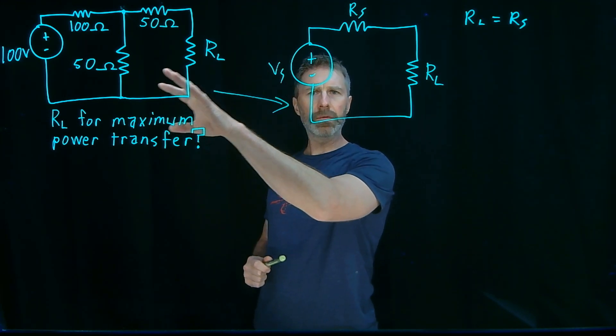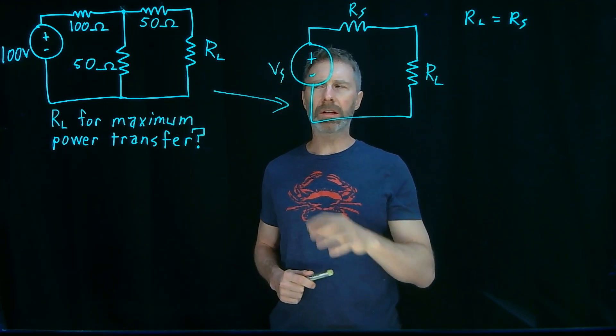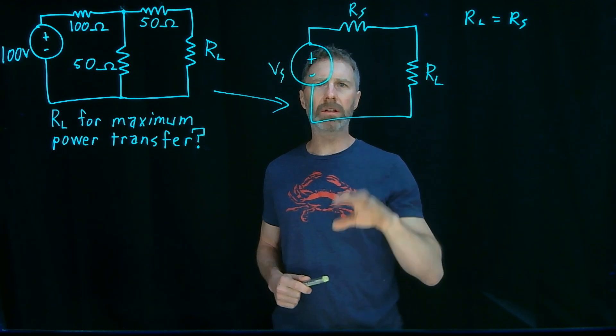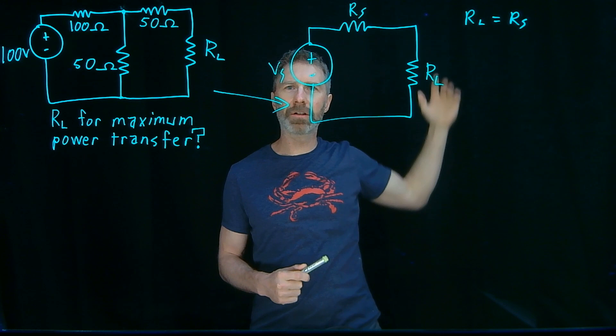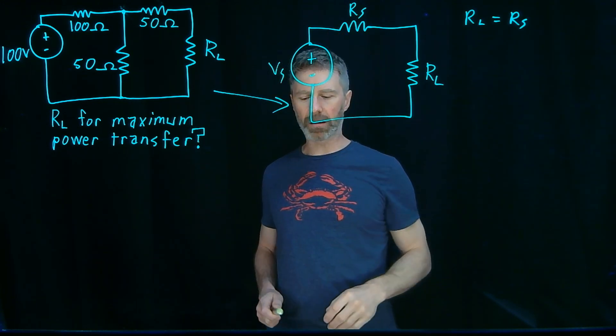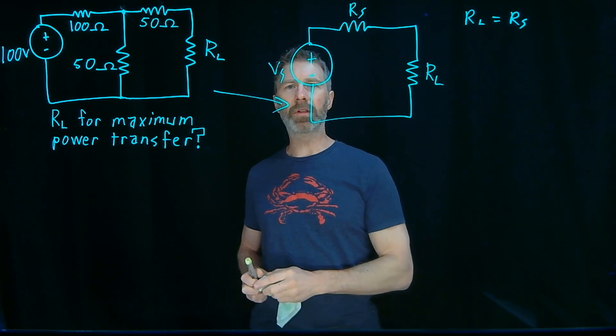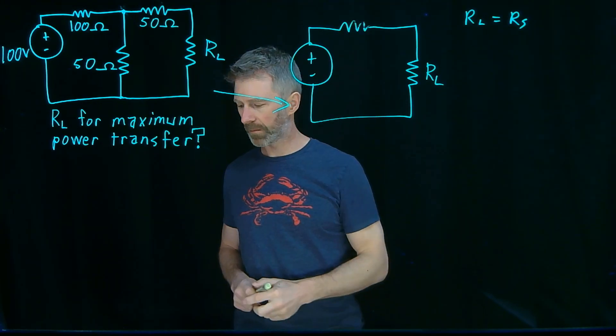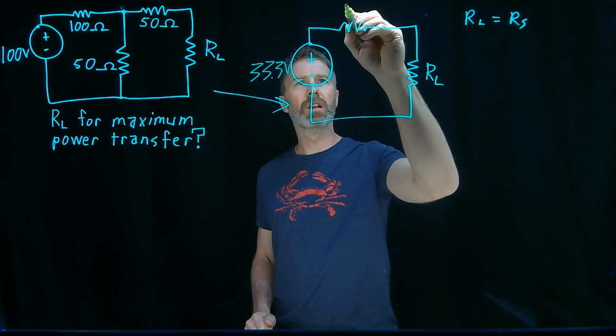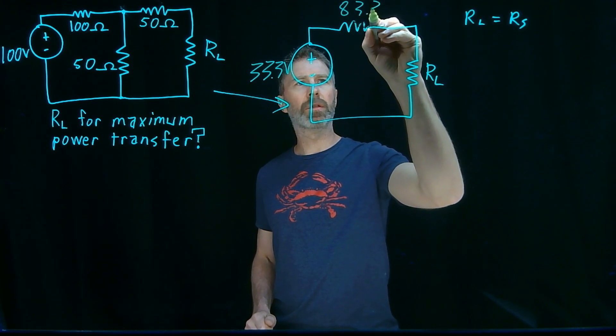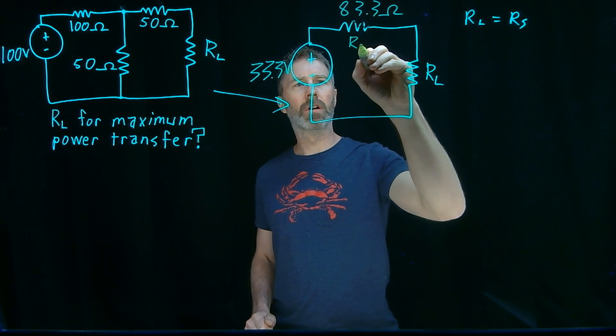And I'm not going to go through that Thevenin transfer, that conversion from this form into this Thevenin equivalent, but you can see the video here in this card somewhere around here, and you can find out what that conversion looks like. I can tell you what the answer is, though. It's the same as if we have a 33.3 volt source and an 83.3 ohm RS.